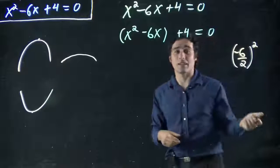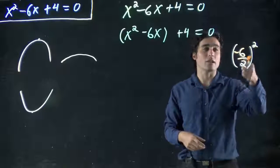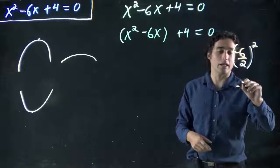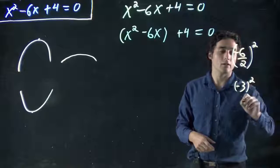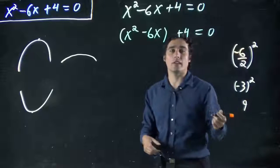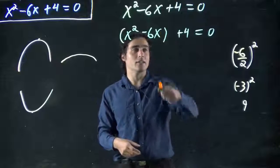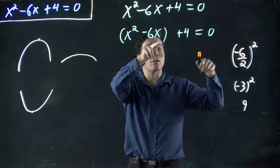And what we want to do is take that and do the b divided by 2 squared. As always, you're going to hopefully see there's a method in my madness. So, we want to do, in our case, minus 6 divided by 2 all squared. Or, in other words, minus 3 squared, which is 9. We've got this 9. What are we going to do with that?